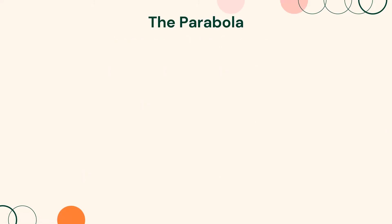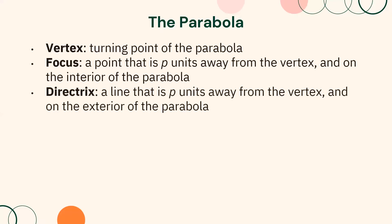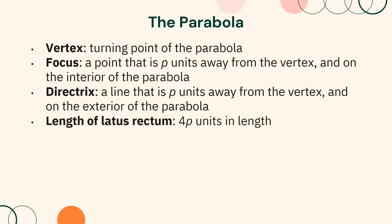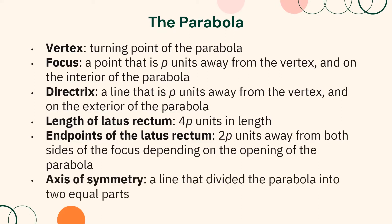Moreover, we have noted these important remarks about the elements of a parabola. The vertex is the turning point of the parabola. The focus is a point that is p units away from the vertex and on the interior of the parabola. The directrix is a line that is p units away from the vertex and on the exterior of the parabola. The length of the latus rectum is equal to 4p units. The endpoints of the latus rectum are 2p units away from both sides of the focus depending on the opening of the parabola. And the axis of symmetry is a line that divides the parabola into two equal parts.